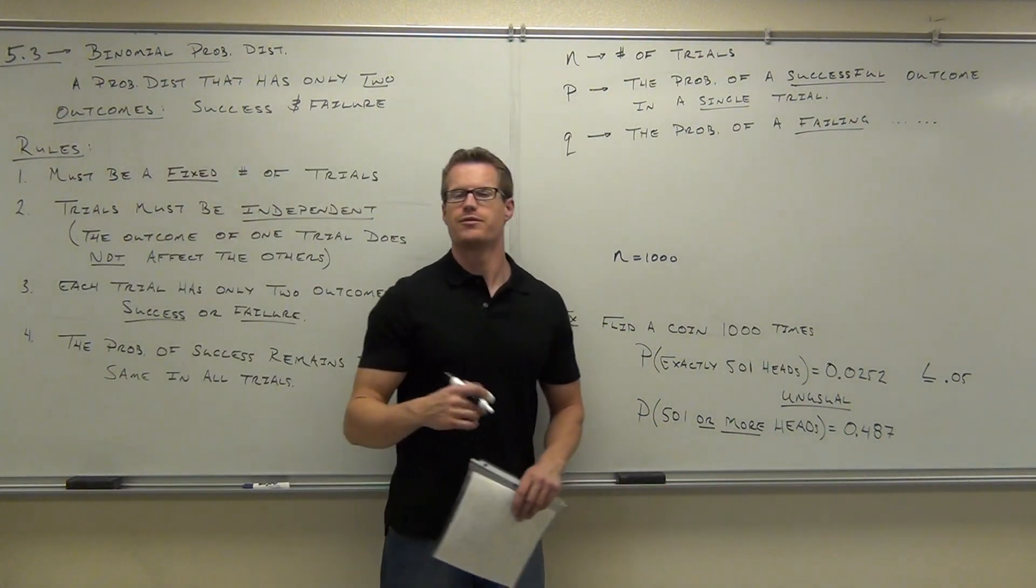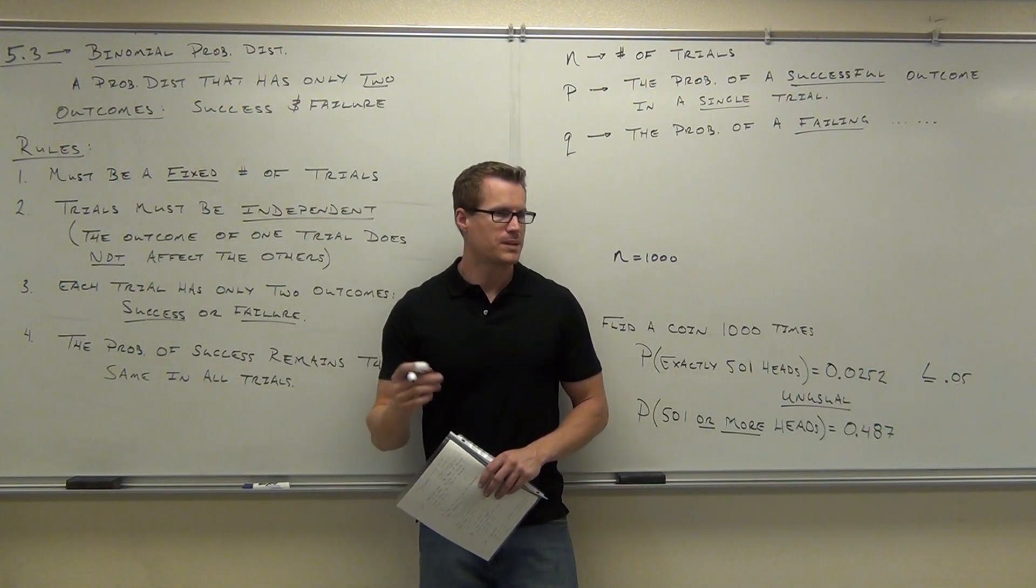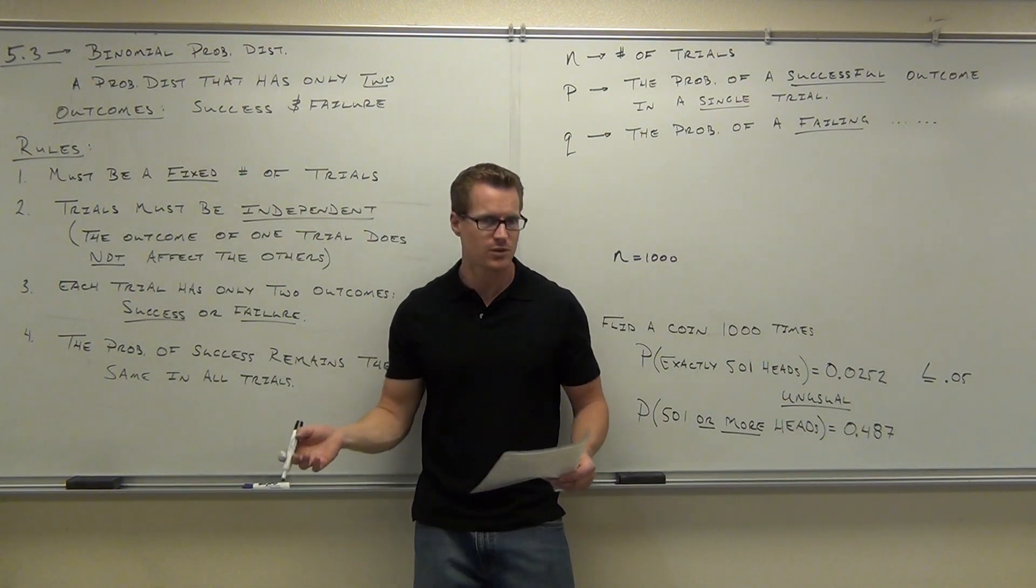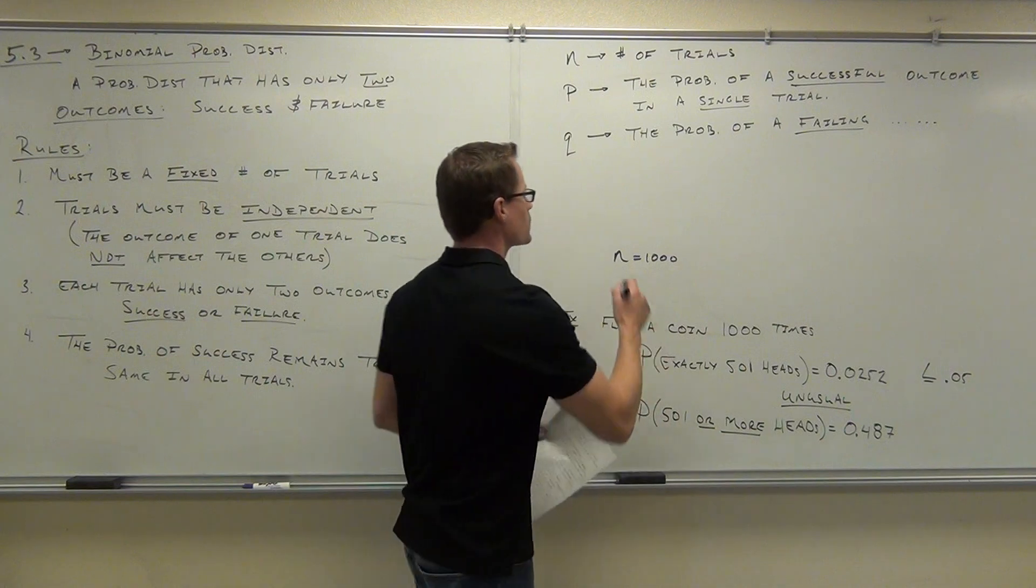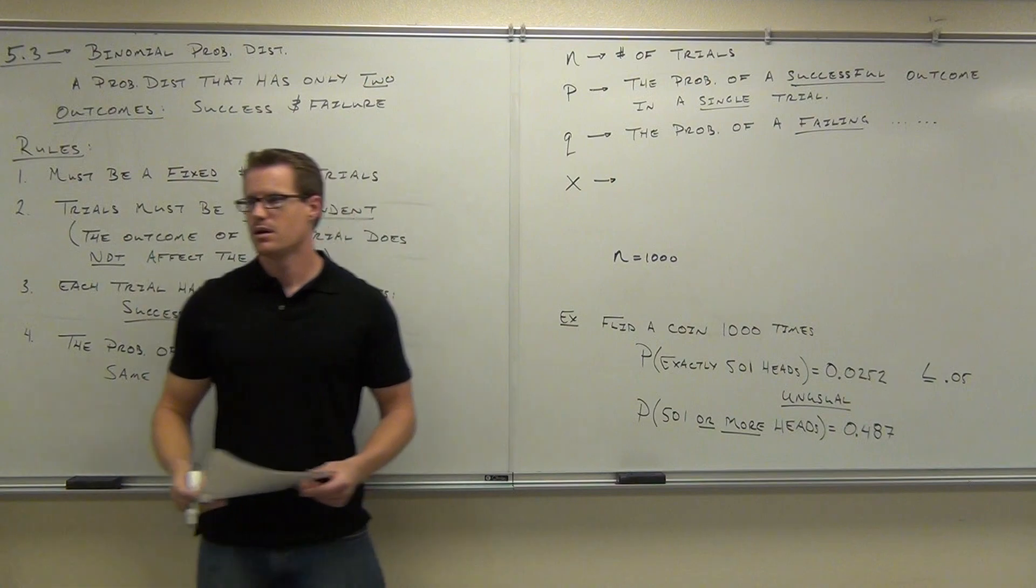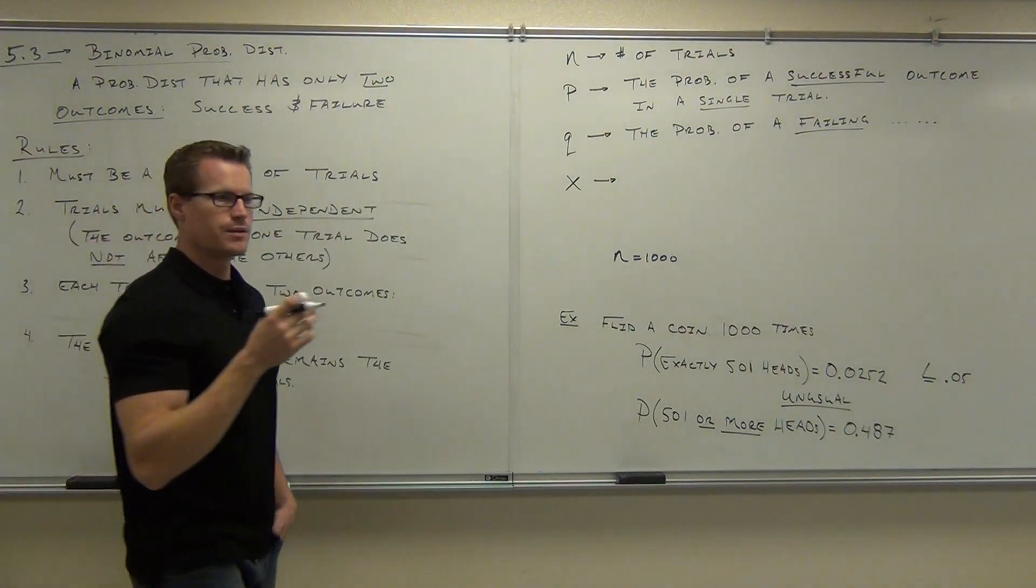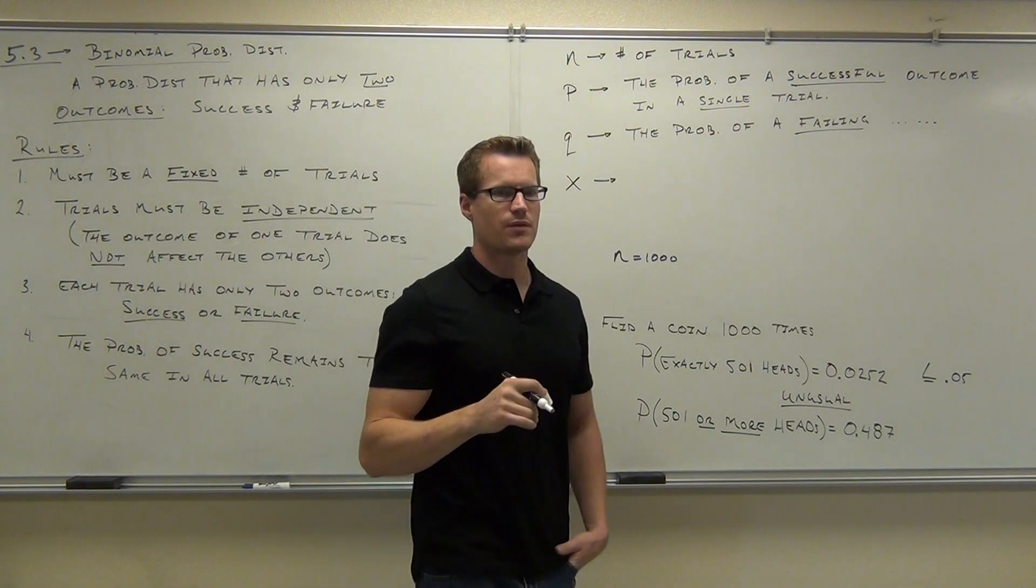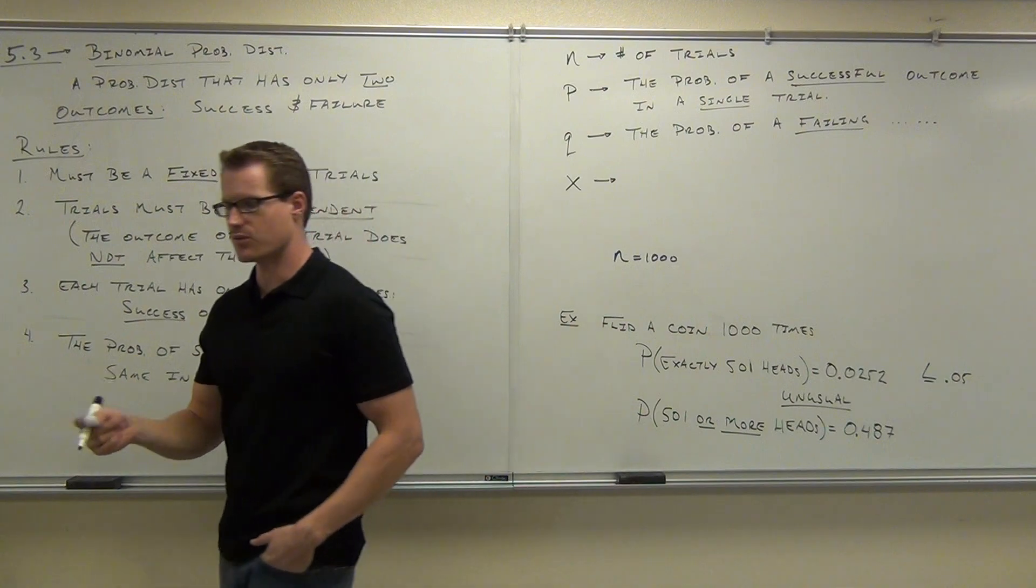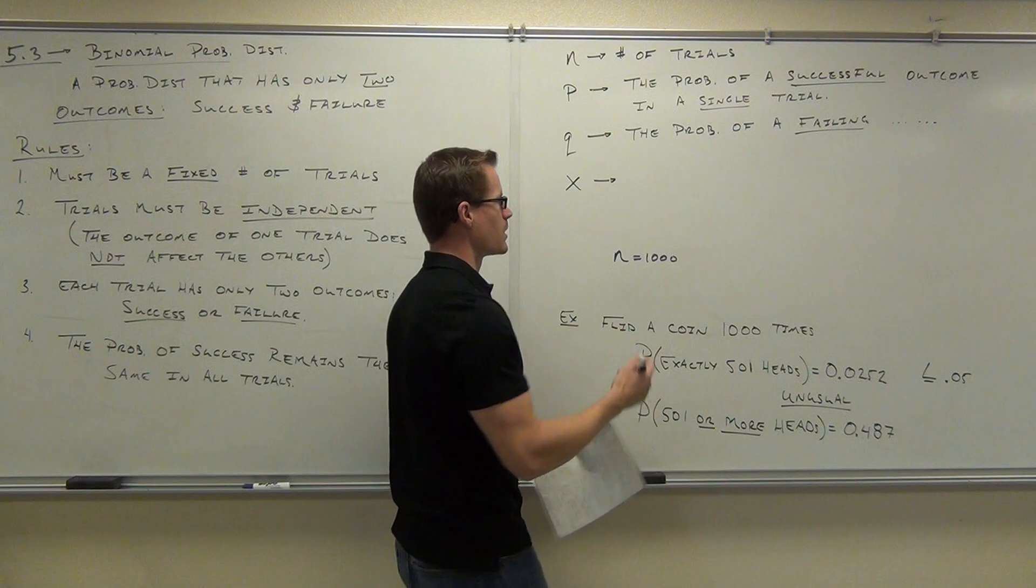We haven't dealt with our variable yet. We have n - n is going to be given to you, it's the number of trials that you have. p, lowercase letter p, is the probability of a successful trial. You'll also be given that. The same with Q. You have to be given those things. Also, what you're looking for is the X. In our case, the X is the number of successes that you're looking for. The number of successes that you're looking for, or the number of successes that occur in the n trials.